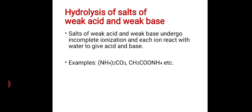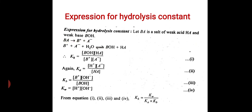Such salts undergo incomplete ionization and each ion reacts with water. So BA forms B+ and A−, and B+ and A− react with water to form BOH and HA. KH is given as the molar concentration of BOH times the molar concentration of HA, divided by the molar concentration of B+ times the molar concentration of A−. This is equation 1.